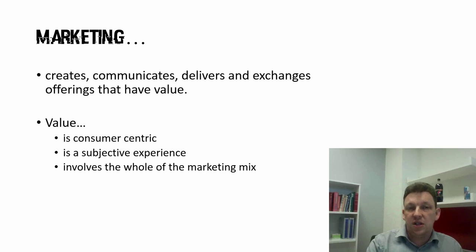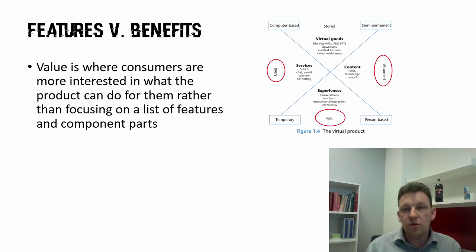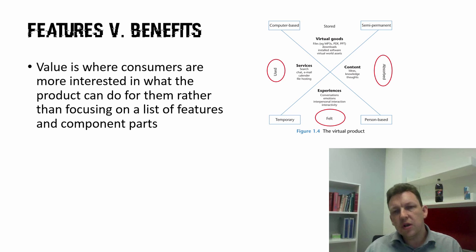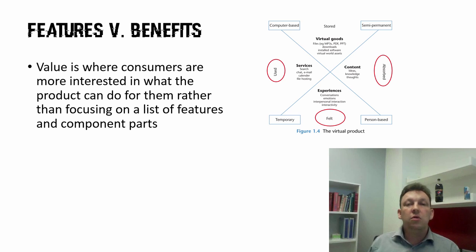This is the notion of value — moving away from what is the feature or component part, through to what does the customer get from interacting with what you've created. Rather than feature, stick to benefit. Figure 1.4 talks about the virtual product: the outcomes you're looking for — are you going to use something, feel something, store something, absorb something? Content, experience, service, virtual goods — look at where the benefits lie.